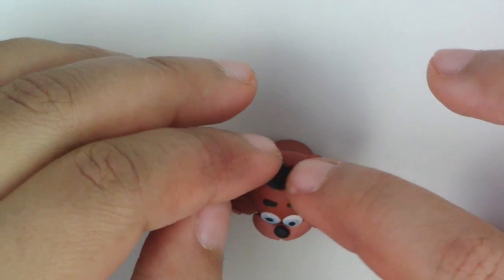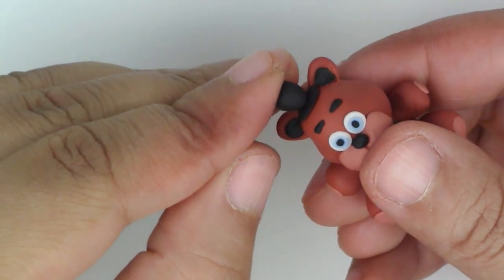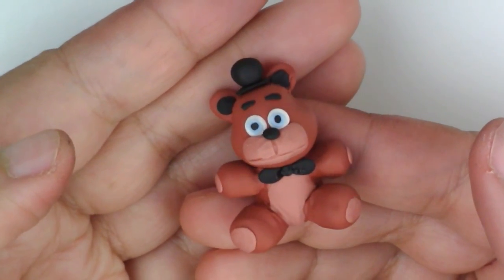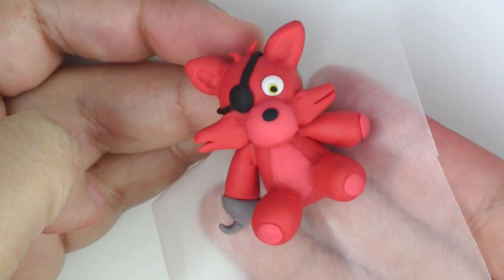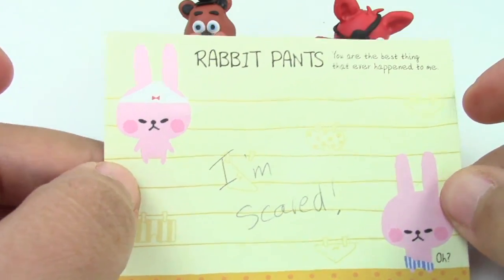Now for the hat, flatten a piece and put it on top of the head. Then push down an upside down teardrop right on top. Bake them according to package instructions. And now you can enjoy your very own custom Five Nights at Freddy's erasers.